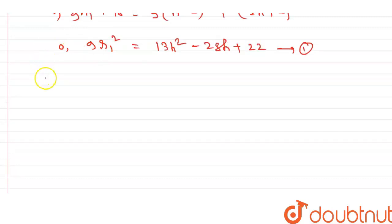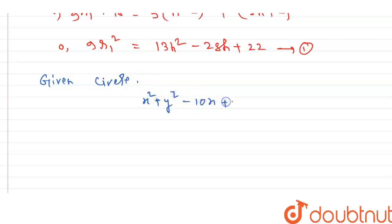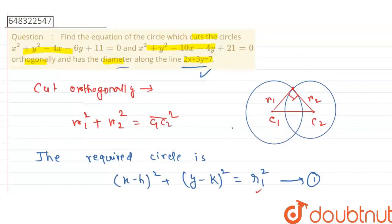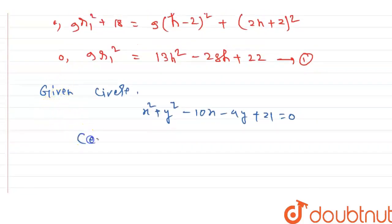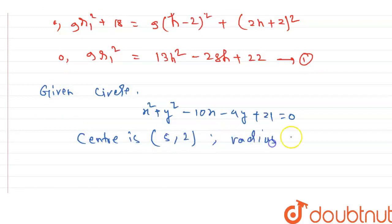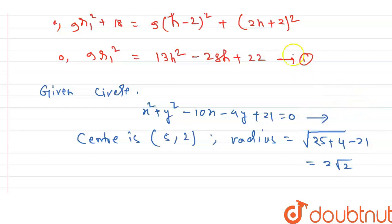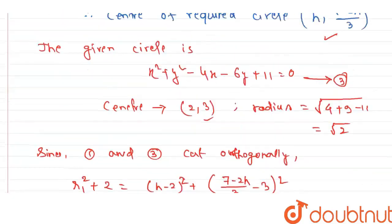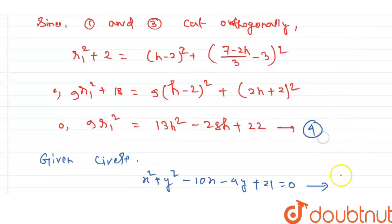The second given circle is x² + y² - 10x - 4y + 21 = 0. Its center is (5, 2) and its radius is √(25 + 4 - 21) = √8 = 2√2. This is equation 5.